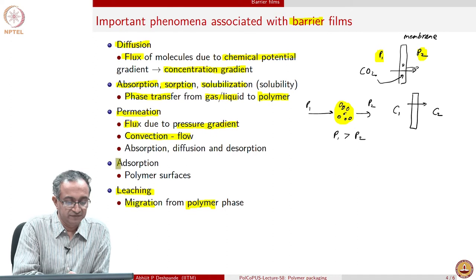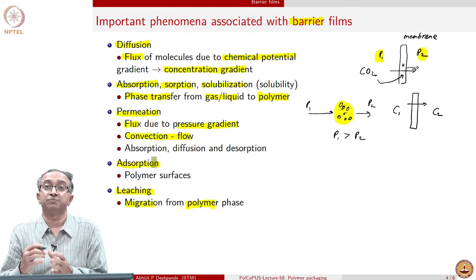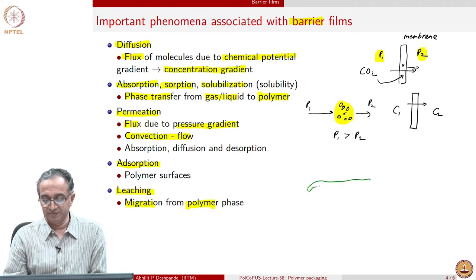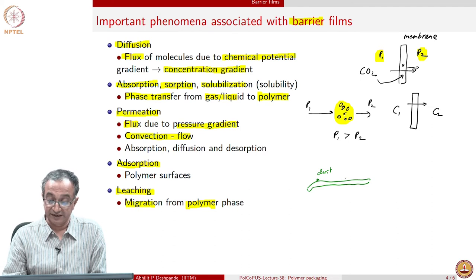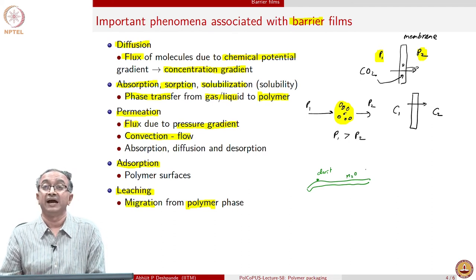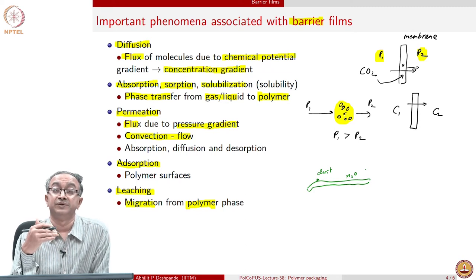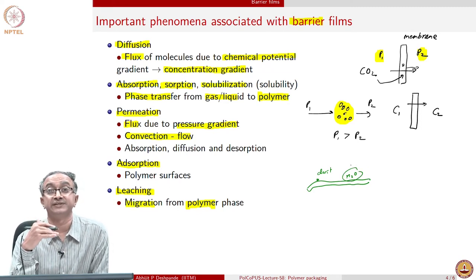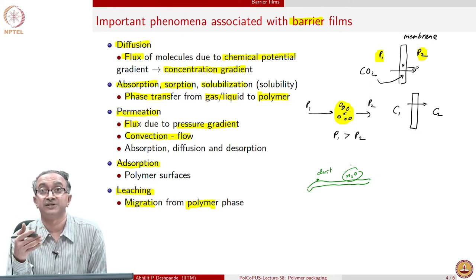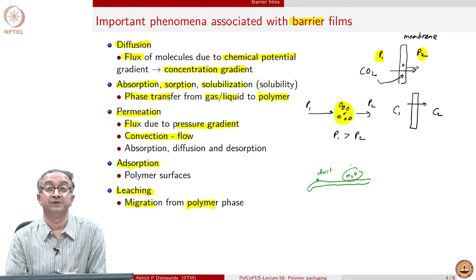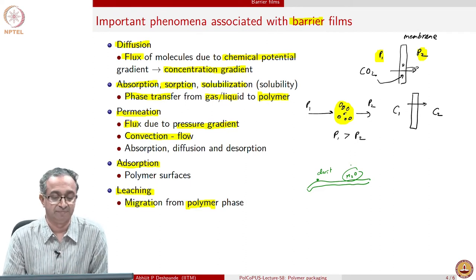Additionally, surfaces can be involved — adsorption of small molecules on polymer surfaces can also happen. A packaging film can accumulate dust particles or larger amounts of water molecules on the surface, which can influence its packaging performance. For example, if water has accumulated on the surface, it may lead to biofilm formation, mould formation, or microbial growth. So adsorption itself can also be a very critical phenomenon determining the overall response of packaging applications of barrier films.